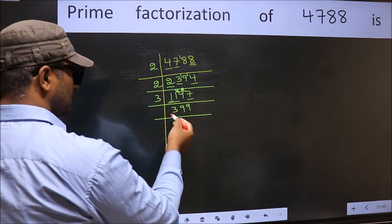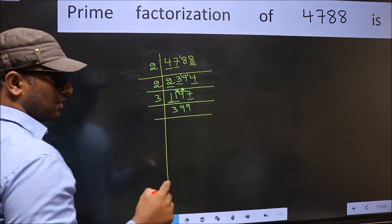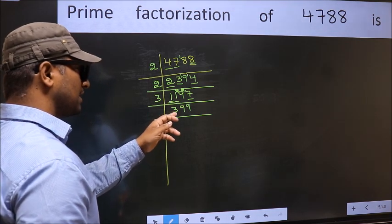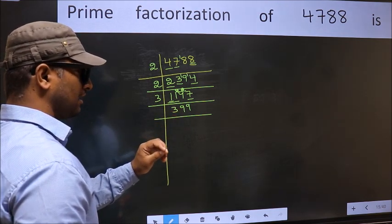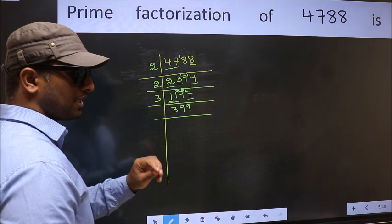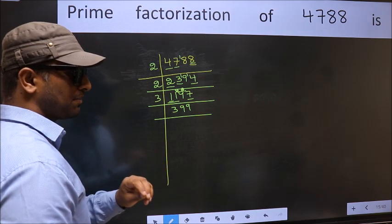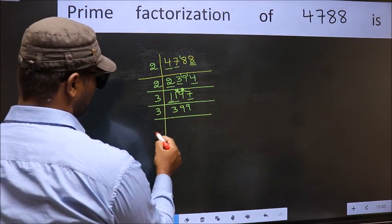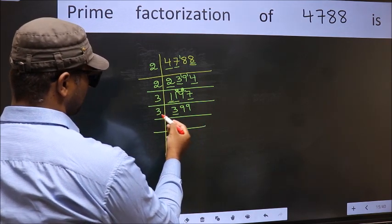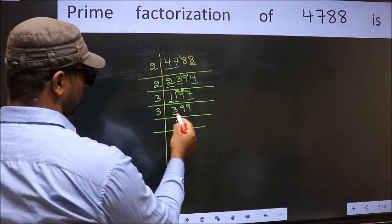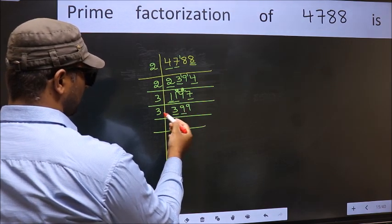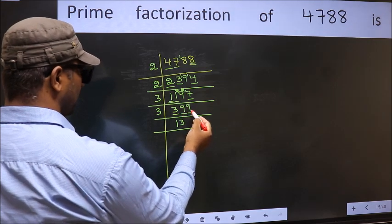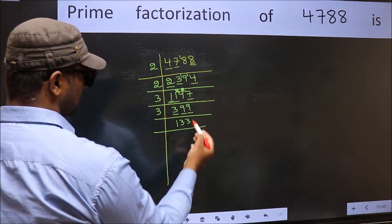Now to check whether it is divisible by 3 or not, add the digits: 3 plus 9 plus 9 equals 21, and 21 is divisible by 3. So this number is also divisible by 3. So take 3. First number 3 — when do we get 3 in the 3 table? 3 ones are 3. The other number 9 — when do we get 9 in the 3 table? 3 threes are 9. The other number 9 — when do we get 9 in the 3 table? 3 threes are 9.